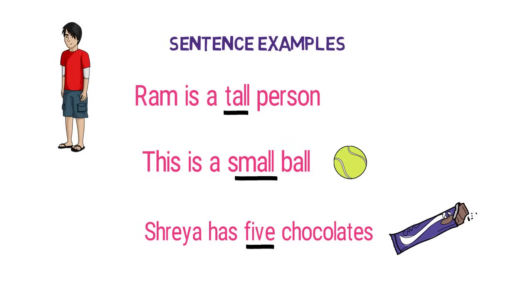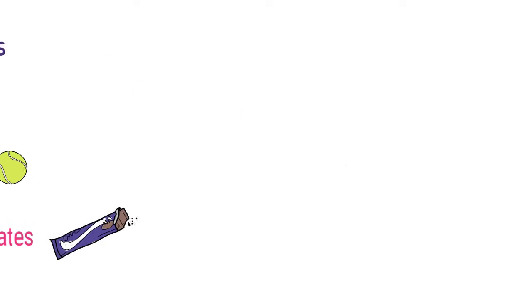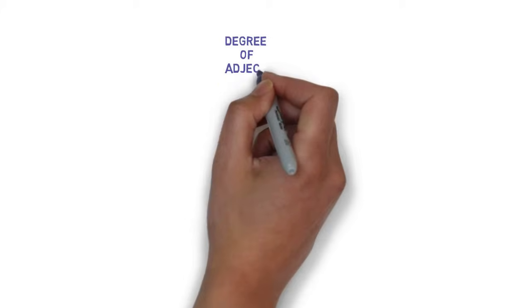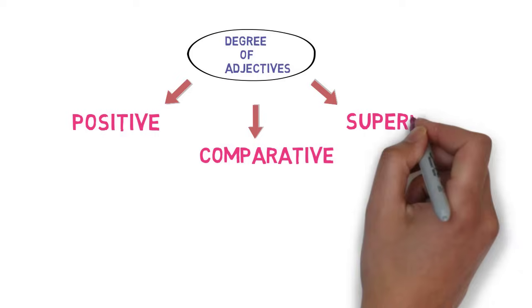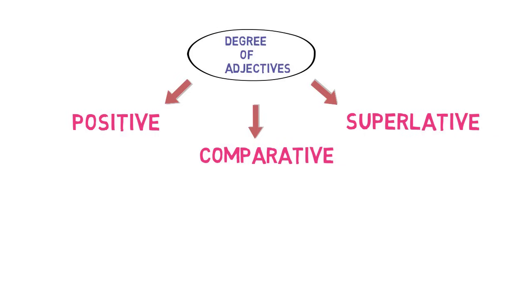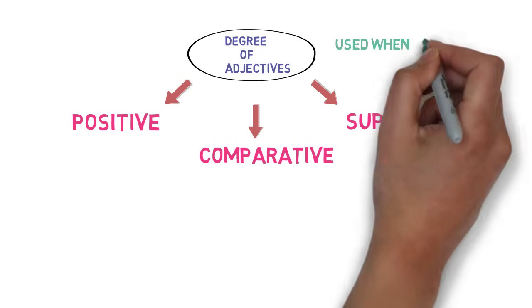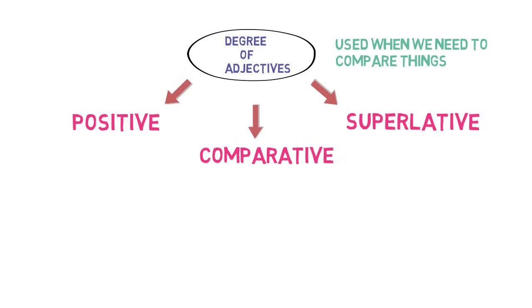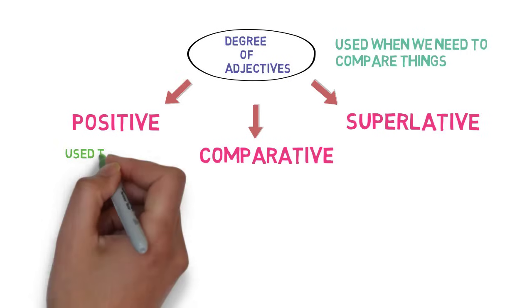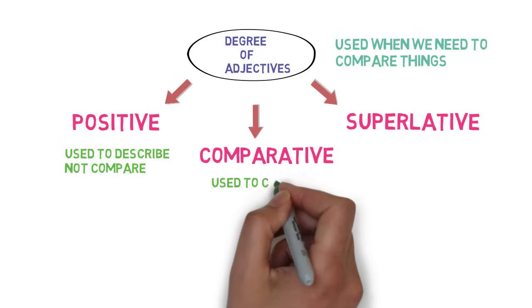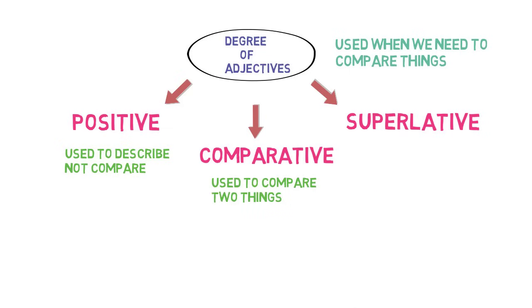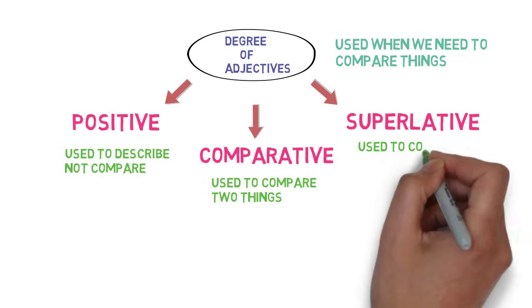Now let's look into the degrees of comparison that adjectives have. Adjectives have 3 degrees of comparison: Positive, Comparative, and Superlative. Why do we need degrees of comparison? They are used when we need to compare things. The positive degree is used to describe — it is not used to compare anything. The comparative degree is used to compare 2 things. And the superlative degree is used to compare more than 2 things.